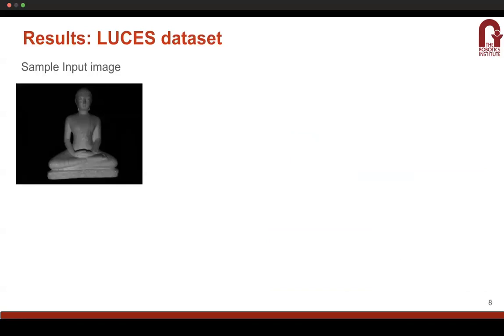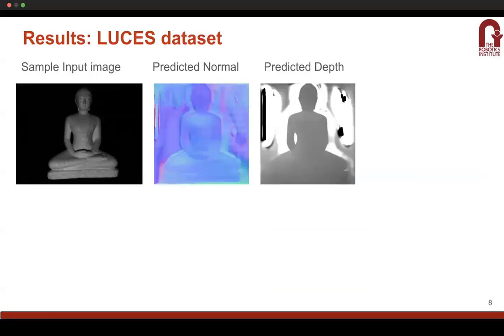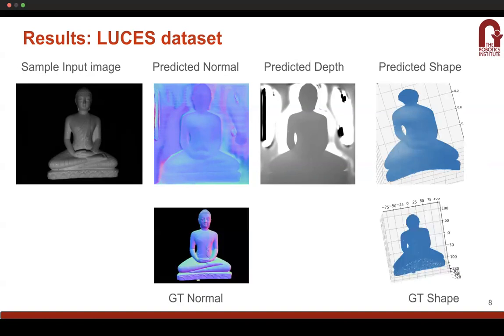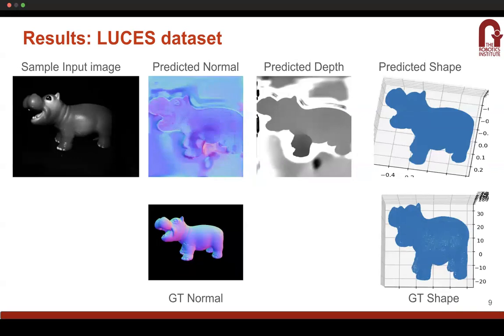Here are the results for the LUCES dataset. Here's one of the sample input images, and using the approach as mentioned earlier, these are the predicted normals and the depths. Using the camera intrinsics and the depth values, we can estimate the predicted 3D shape of the object. For reference, I have also included the ground truth normals and the ground truth shape, and this is another example from the same dataset for the hippo object.